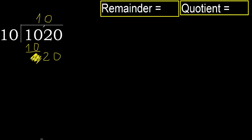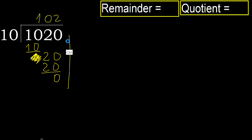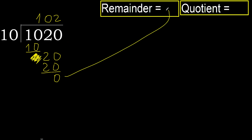20. 10 multiplied by 2 is 20, which is not greater. Subtract 0. Next, that is not a number, therefore finish. 1020 divided by 10 is 102.